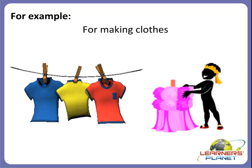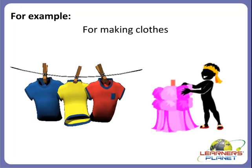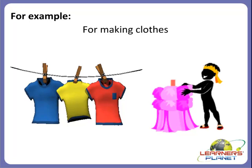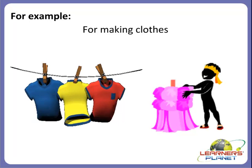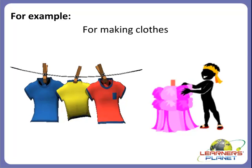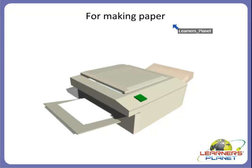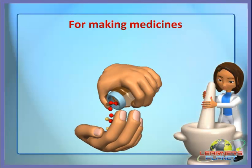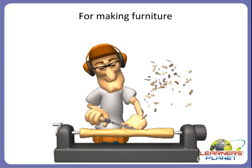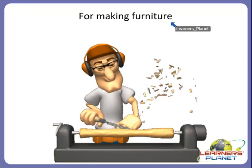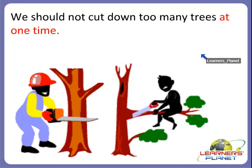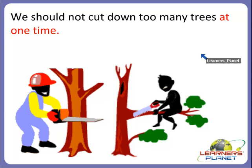We see many examples for which trees are cut down. We cut down trees for many purposes — for example, for making clothes, for making paper, for making medicines, and for making furniture. So children, we cut down trees for many purposes. We should not cut down too many trees at one time. Always remember.